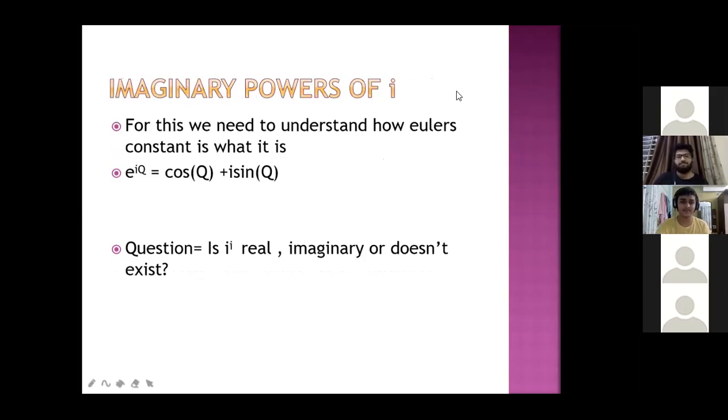Imaginary powers of iota. If e to power iota theta is written, then we can write cos theta plus i sin theta. So we have derived that e to power i pi equals minus 1, because sin of pi equals 0 and cos of pi is minus 1. Now the question is, is iota to the power iota real, imaginary or doesn't exist? Its power exists and it is real.